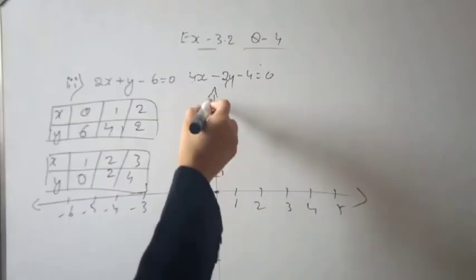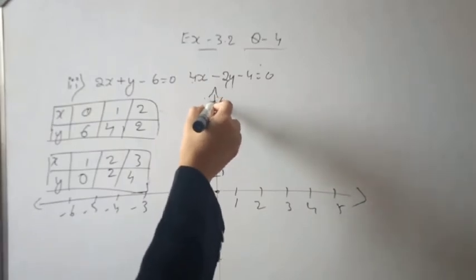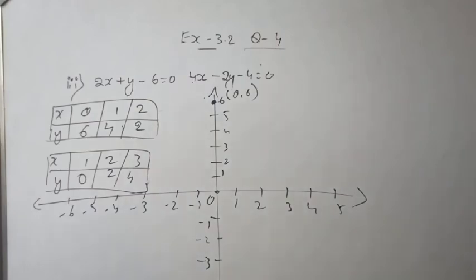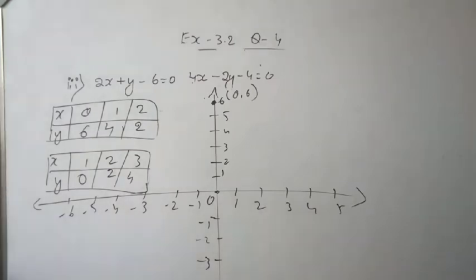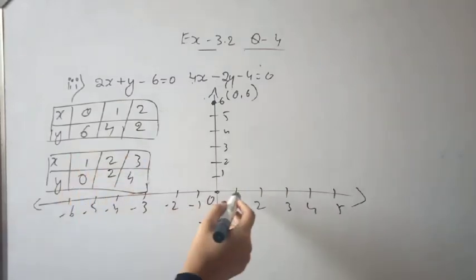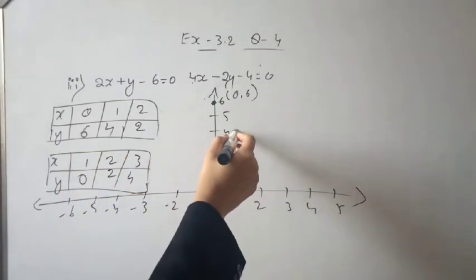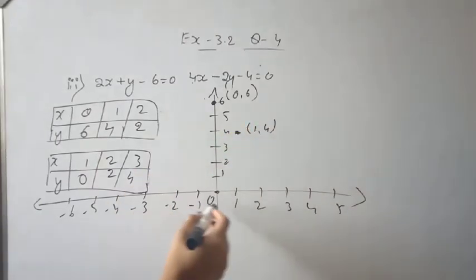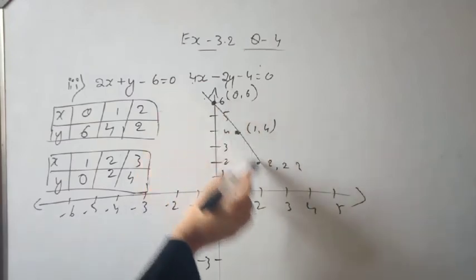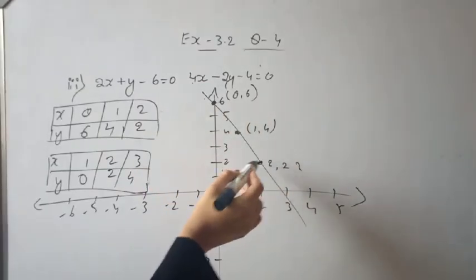Now plotting on the graph: the horizontal axis is the x-axis and the vertical axis is the y-axis. For the first table, when x is 0, y is 6 — plot point (0, 6). When x is 1, y is 4 — plot point (1, 4). When x is 2, y is 2. These three points represent the first line.